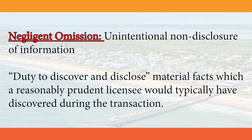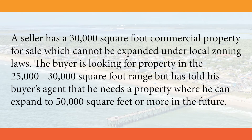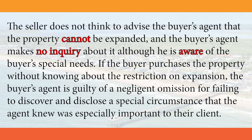Negligent omission: unintentional non-disclosure of information. This involves the duty to discover and disclose material facts which a reasonably prudent licensee would typically have discovered during the transaction. For example, a seller has a 30,000 square foot commercial property for sale which cannot be expanded under local zoning laws. The buyer is looking for property in the 25,000 to 30,000 square foot range, but has told his buyer's agent that he needs a property where he can expand to 50,000 square feet or more in the future. The seller does not think to advise the buyer's agent that the property cannot be expanded, and the buyer's agent makes no inquiry about it, although he is aware of the buyer's special needs. If the buyer purchases the property without knowing about the restriction on expansion, the buyer's agent is guilty of negligent omission for failing to discover and disclose a special circumstance that the agent knew was especially important to their client.